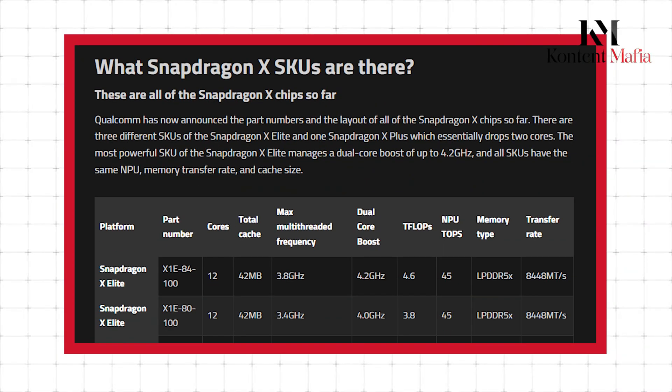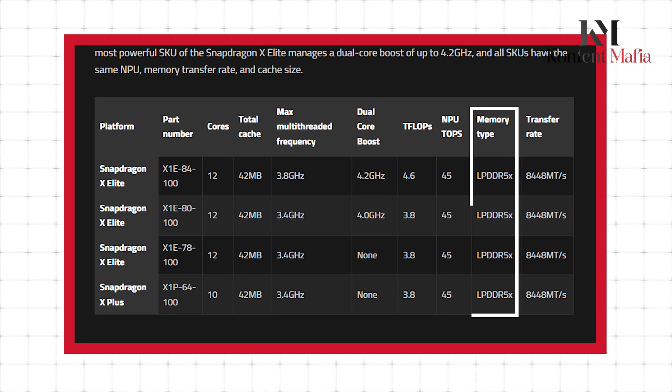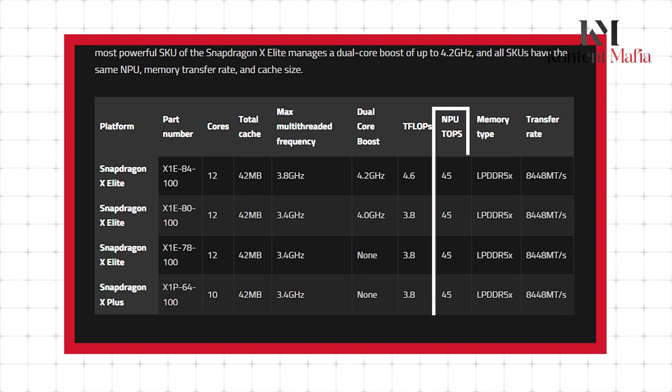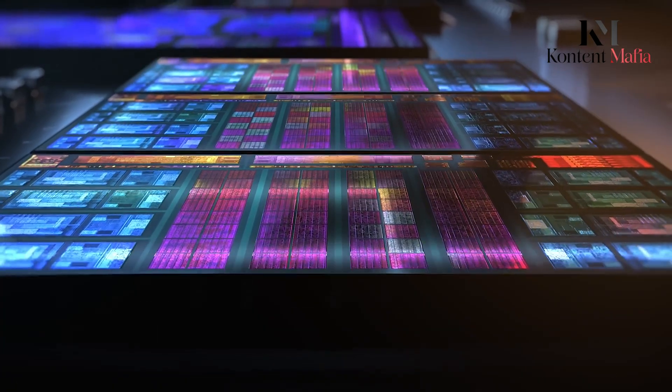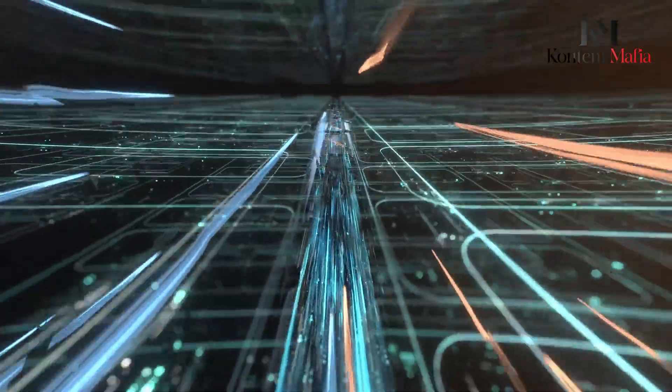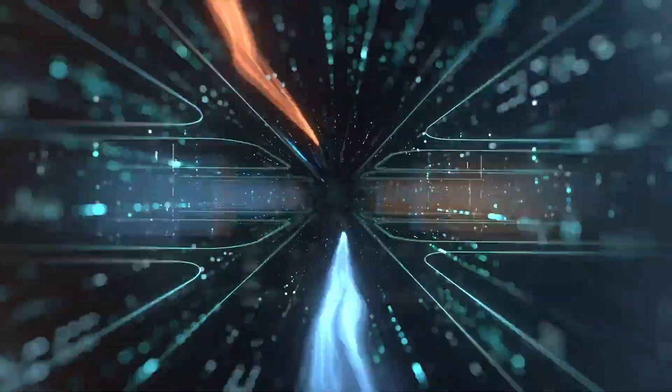Across the entire Snapdragon X lineup, you'll find blazing fast LPDDR5X RAM support at 8,448 MTS transfer rates, and of course, that 45 tops AI monster under the hood. But unlike Intel and AMD's hybrid designs combining performance and efficiency cores, every single Orion core is a beefy performance unit, a daring monolithic architecture that Qualcomm claims will out-muscle and out-efficiency the competition.